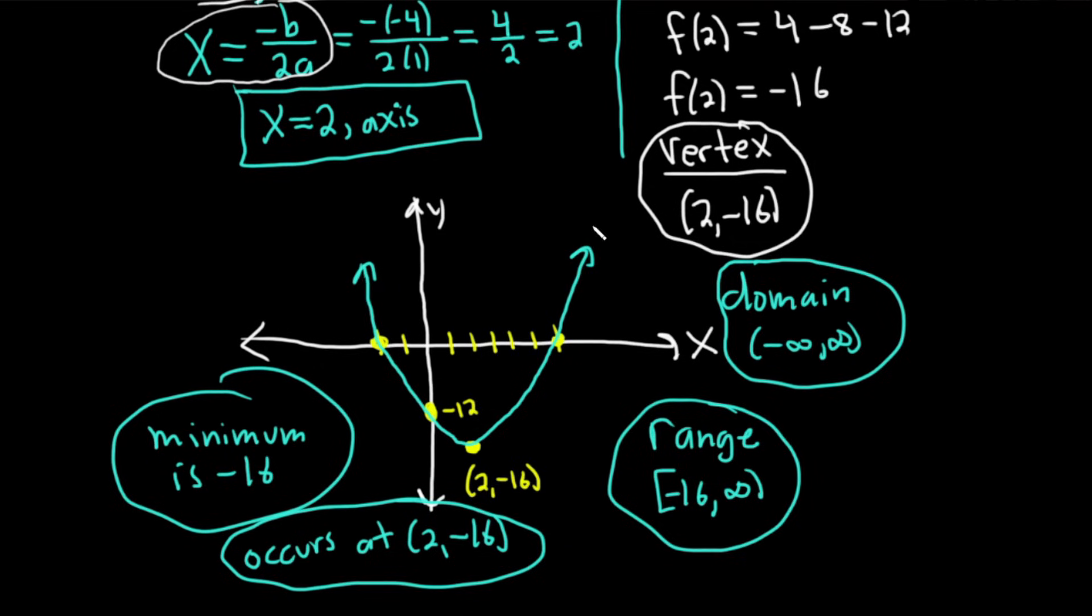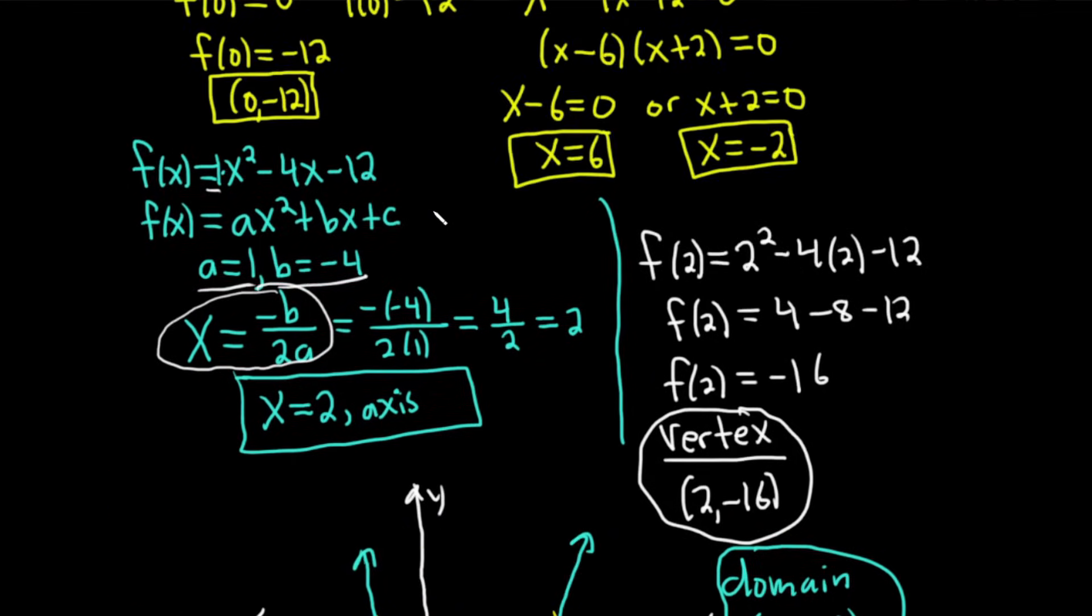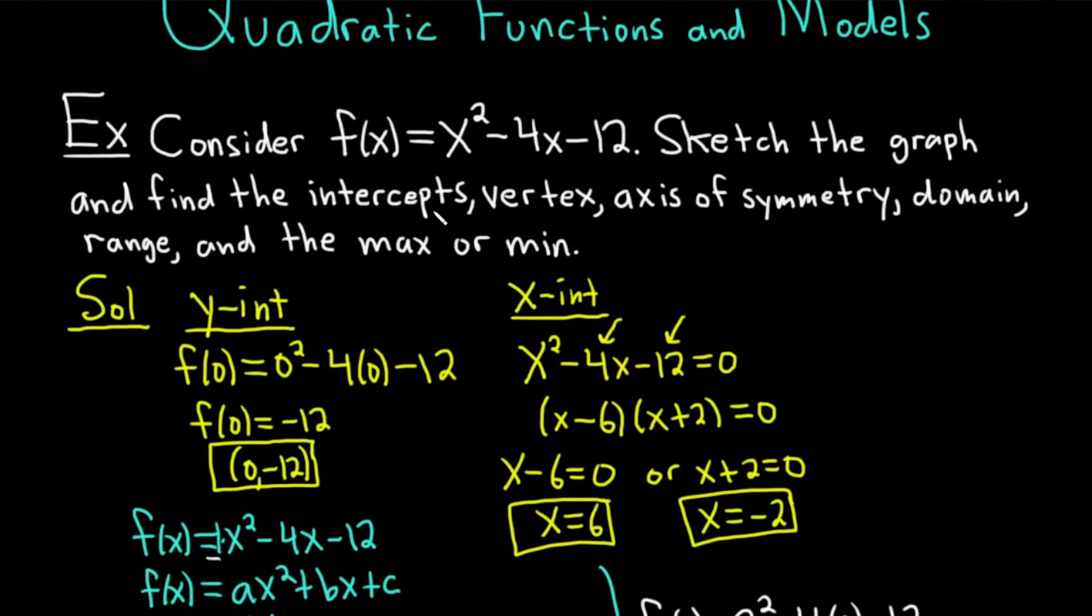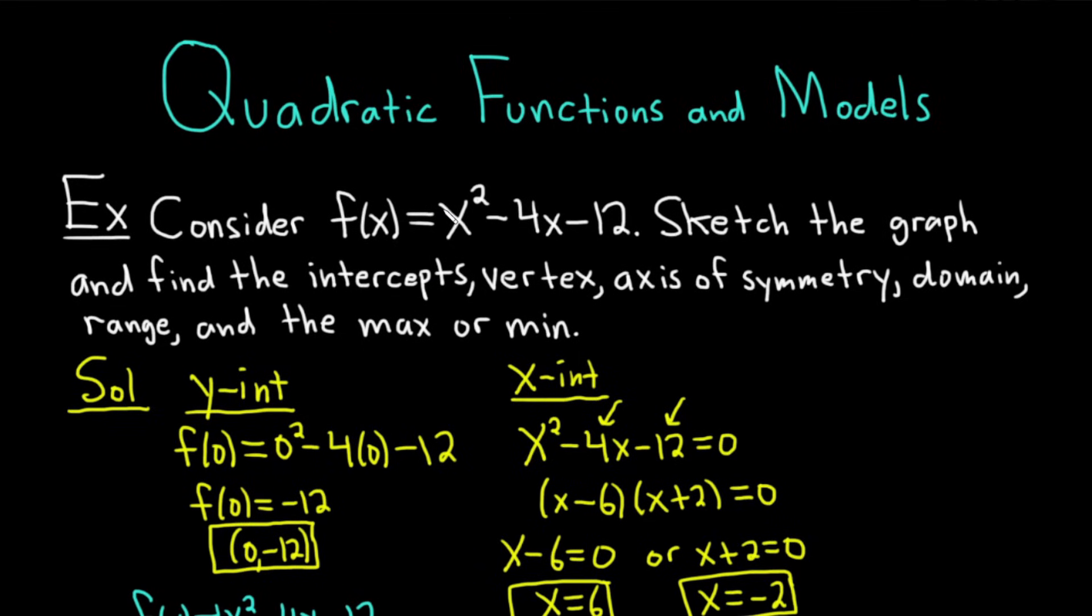Right. So that's pretty much it. Oh, I should mention something else. At the beginning of the problem, when we saw the question, you could tell right away it's going to have a minimum. Because if you look here at x², a = 1, which is bigger than 0. That opens up. So you're going to have a min. If a is less than 0, it opens down. And then you have a max. Okay.